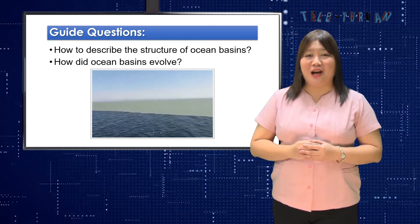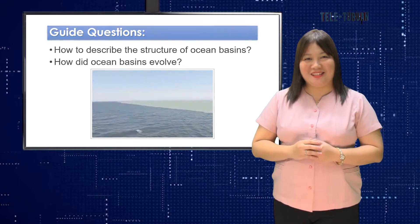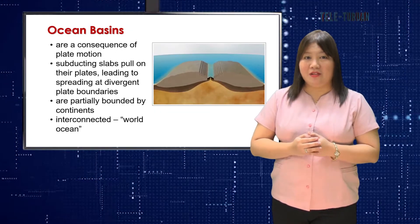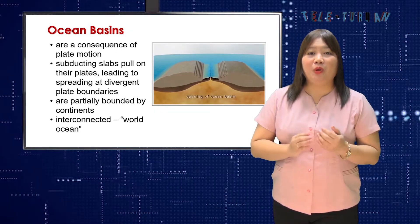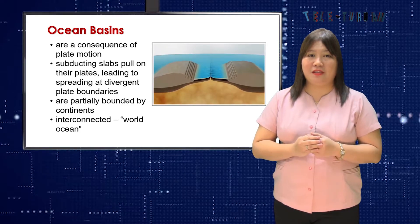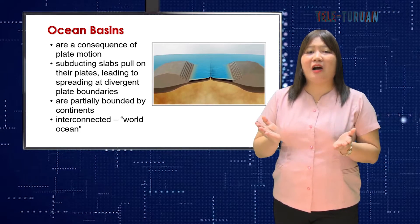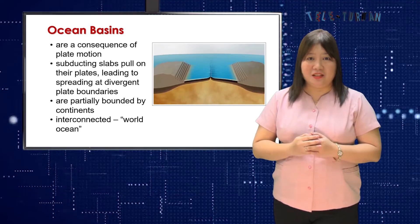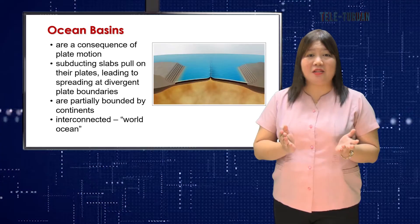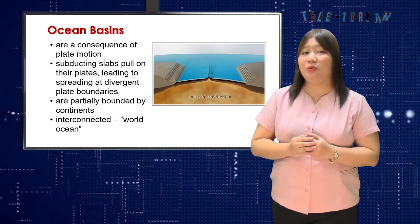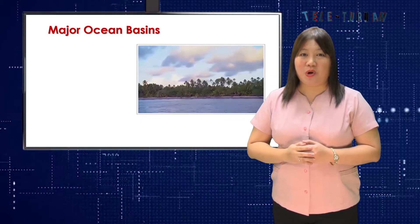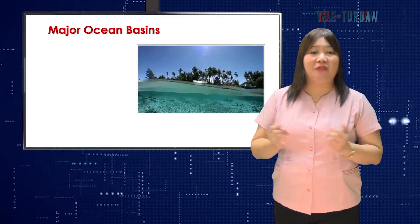Let us first find out what are ocean basins. Ocean basins are a consequence of plate motion. Subducting slabs pull on their plates, leading to spreading at divergent plate boundaries. The ocean basins are partially bounded by the continents, but they are interconnected, which is why marine scientists refer to a single world ocean. There are five major ocean basins, coordinating with the major oceans of the world.